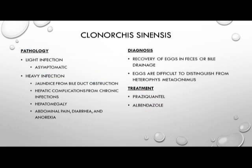Symptoms of Clonorchis sinensis infection can be asymptomatic with light infections, or with heavier infections can cause jaundice from bile duct obstruction, hepatic complications from chronic infection, hepatomegaly (enlargement of the liver), abdominal pain, diarrhea, and anorexia. Diagnosis can be achieved through recovery of the eggs in the feces or bile drainage. Those eggs are difficult to distinguish from Heterophyes and Metagonimus, but can be differentiated through the thickening of the opercular rim and the comma-shaped knob on the abopercular end.